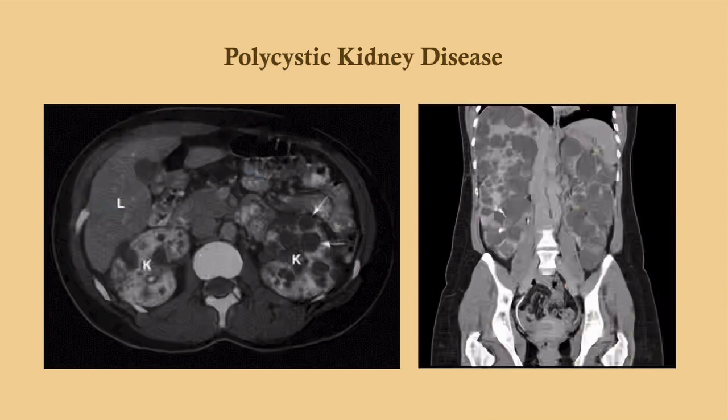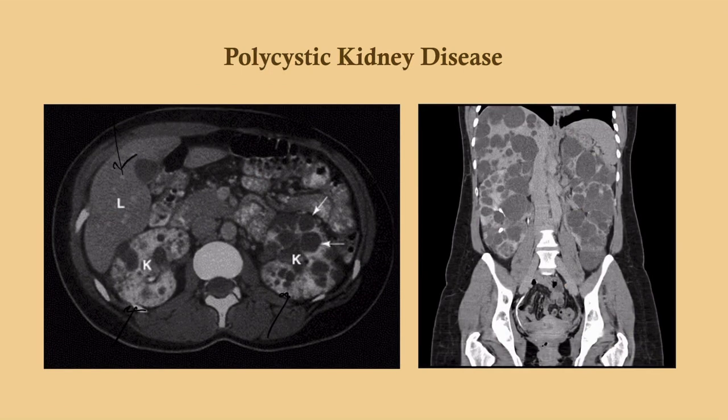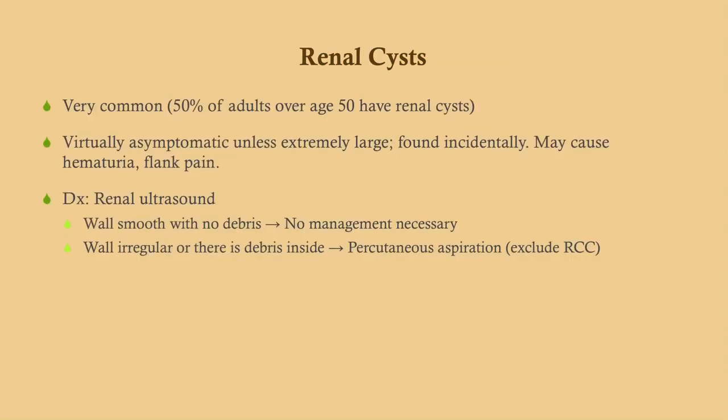Here is polycystic kidney disease on CT. You can see multiple cysts bilaterally, and you can even see some cysts in the liver parenchyma. Regular simple renal cysts are very common — about half of adults over age 50 have at least one, and they're pretty much always asymptomatic, found incidentally on CT. They may cause hematuria or mild flank pain; if a patient comes in with those symptoms, you work them up and find a little blood in the urine, that's probably what you're dealing with.